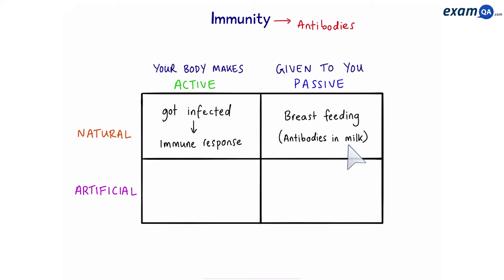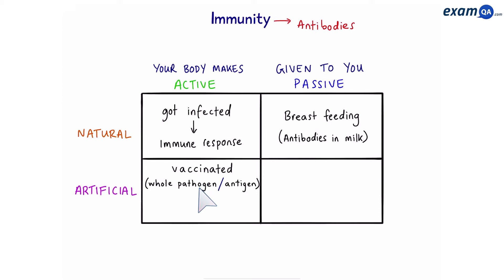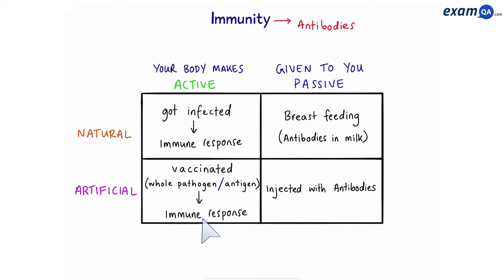Moving on to active artificial: an example is vaccination. A vaccine can contain a whole pathogen or simply just the antigens of the pathogen. In either case, this will trigger the person's immune response and therefore the production of antibodies. Finally, in passive artificial, the organism is simply injected with antibodies.